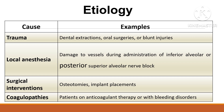Severe infections like abscesses can cause blood vessel damage leading to localized bleeding. Surgical procedures for implants may result in hematoma due to manipulation of surrounding tissues. Damage to vessels during administration of inferior alveolar nerve or posterior superior alveolar nerve block can also cause hematoma.